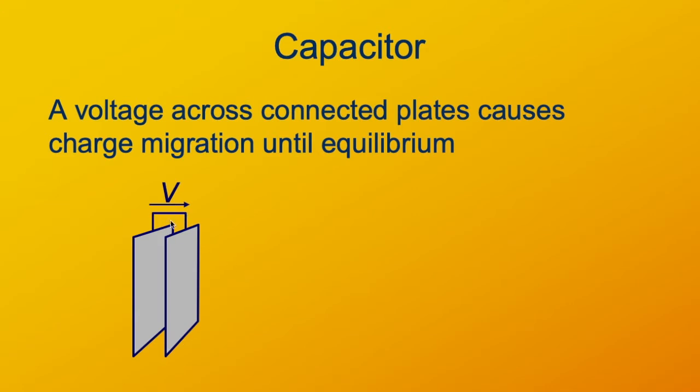You put a potential difference across the two plates. In other words, the two plates have a different electrical potential. When that happens, the charges will move in response to that potential. You'll have positive charges moving in the direction of the potential and negative charges moving opposite the direction.